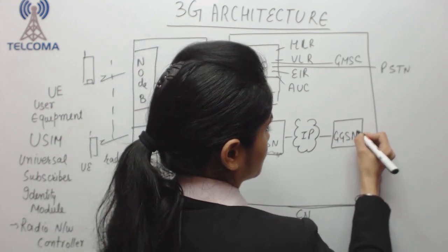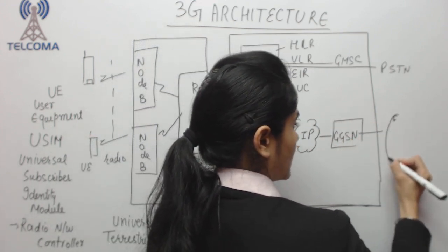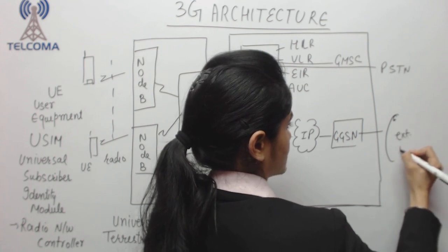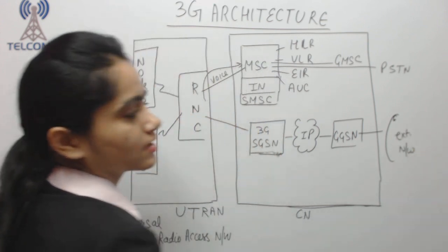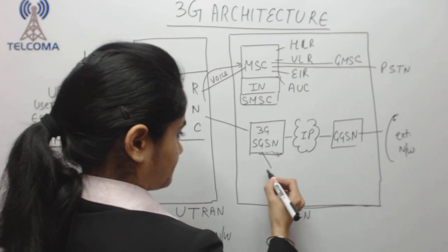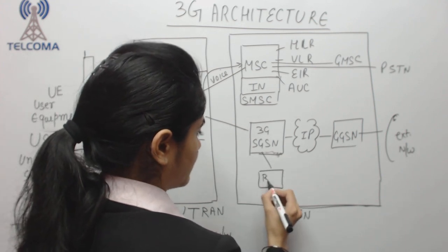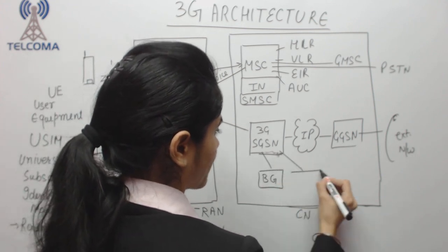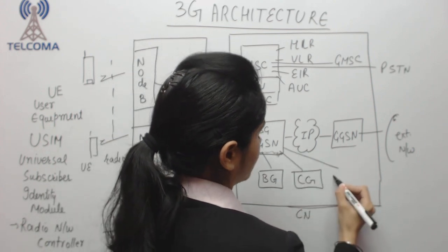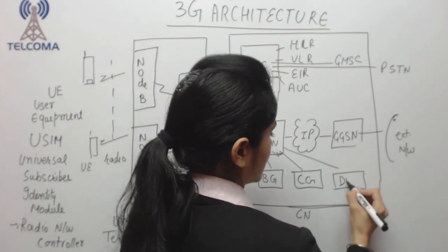GGSN as Gateway GPRS Support Node. This is connected to external network consisting of various databases. Other than this, we have a Border Gateway, we have Charging Gateway, we have Domain Name Servers attached.